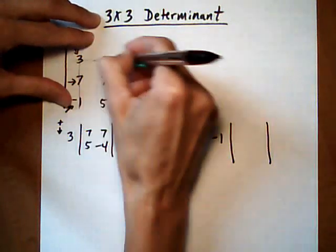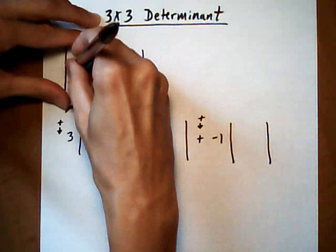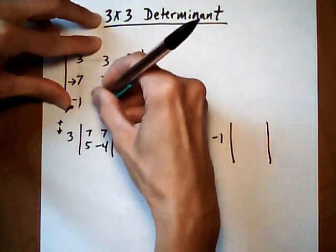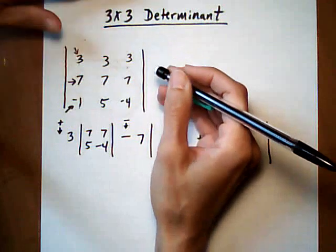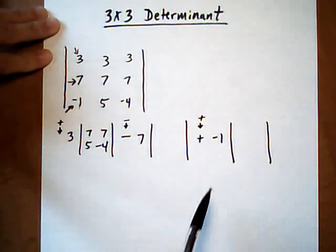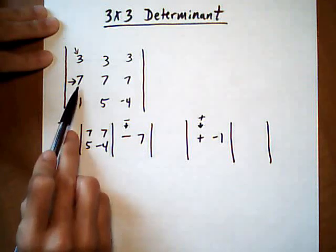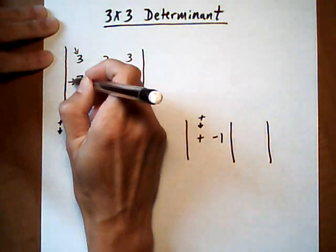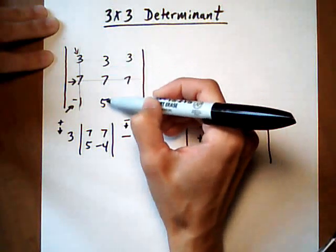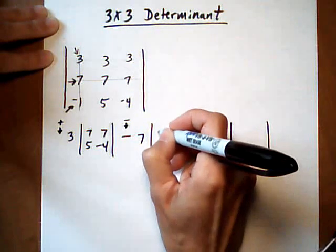Alright, now we're going to do the same thing for the next one. So let's get rid of these lines. Now we're at this 7, so we're going to get rid of the row and the column that contains it. And then we have 3, 3, 5, minus 4 left.